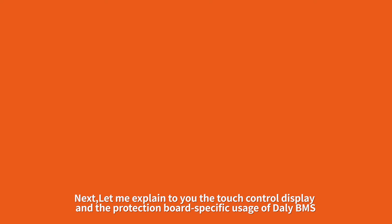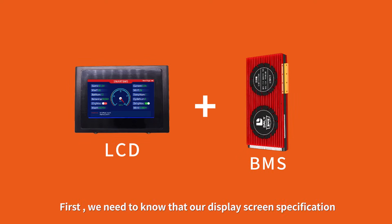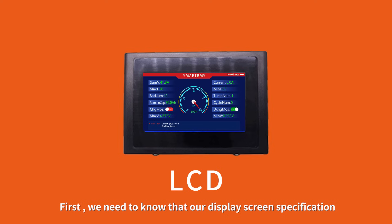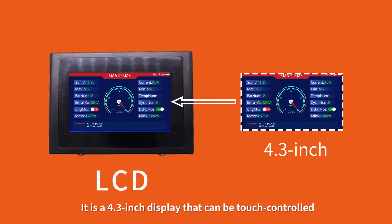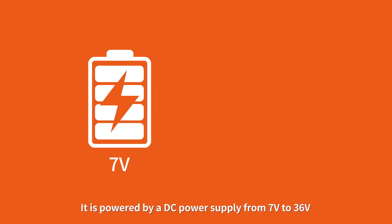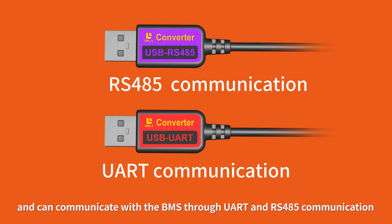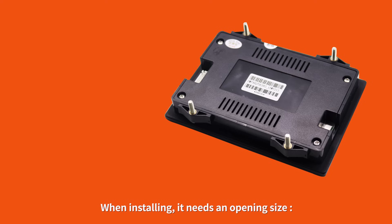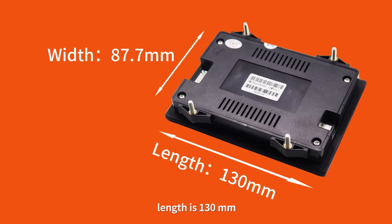Let me explain the touch control display and the protection board's specific usage for the daily BMS. First, we need to know that our display screen specification: it is a 4.3 inch display that can be touch controlled. It is powered by a DC power supply from 7V to 36V, and can communicate with the BMS through UART and RS-485 communication. When installing, it needs an opening size of 87.7 millimeters wide and 130 millimeters in length.